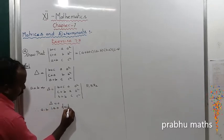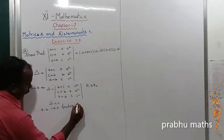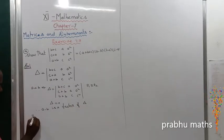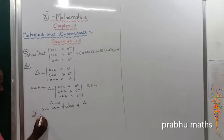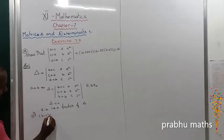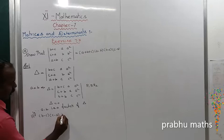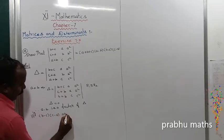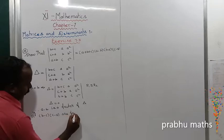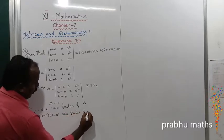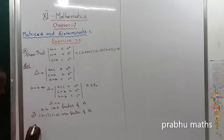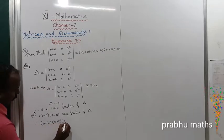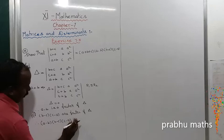Similarly, (b-c) is a factor of delta, and (c-a) is a factor of delta. Therefore (a-b)(b-c)(c-a) are all factors of delta.